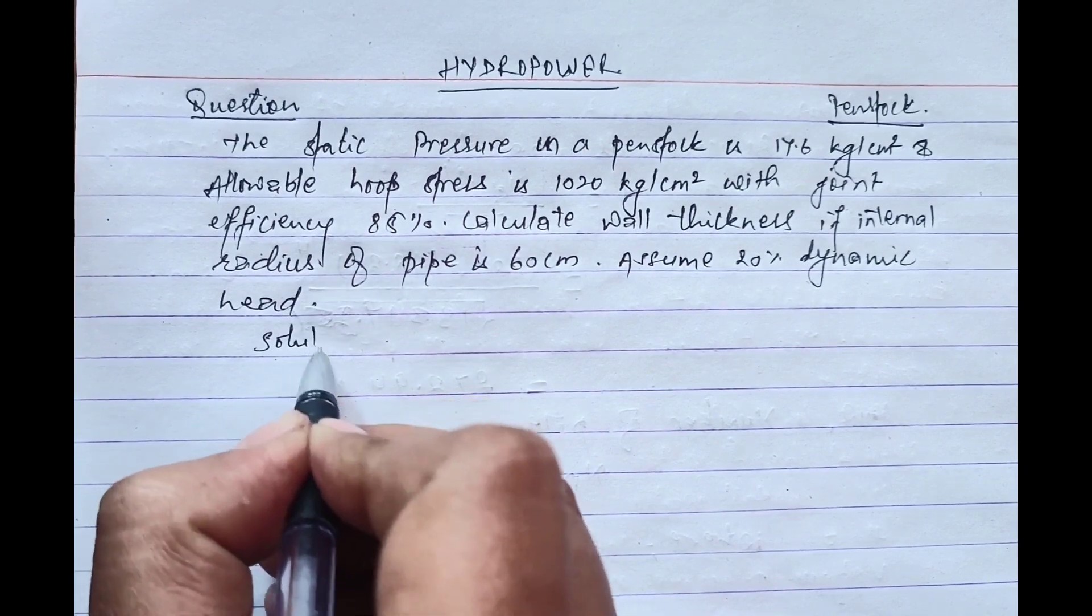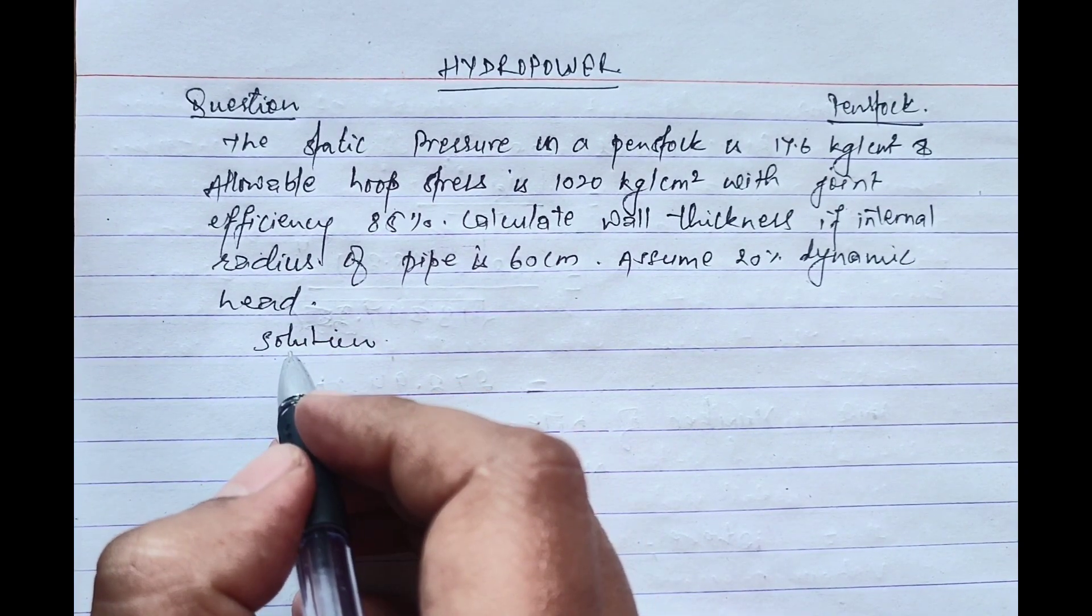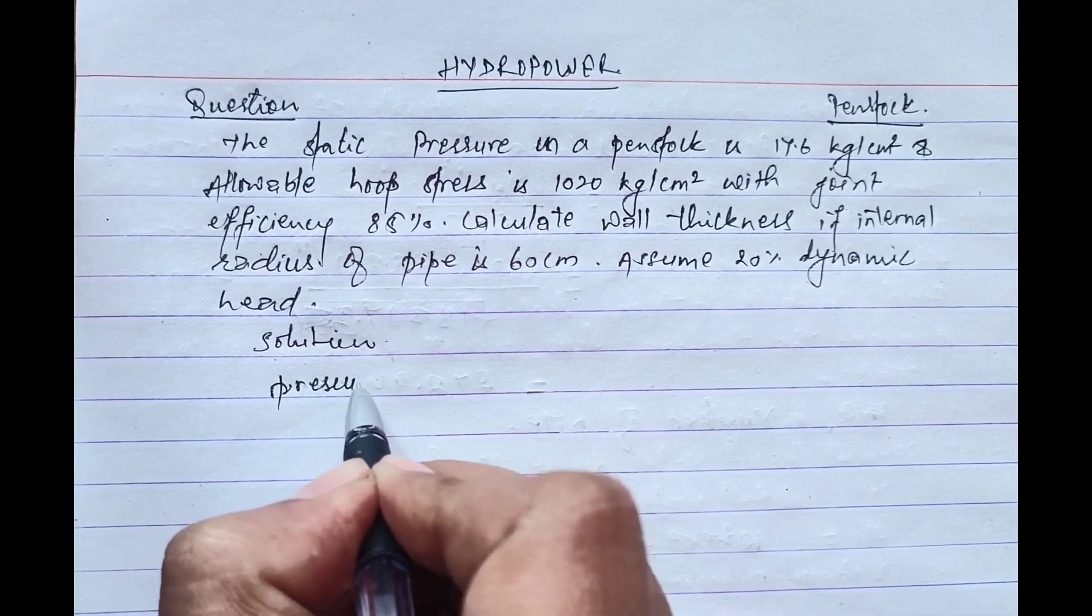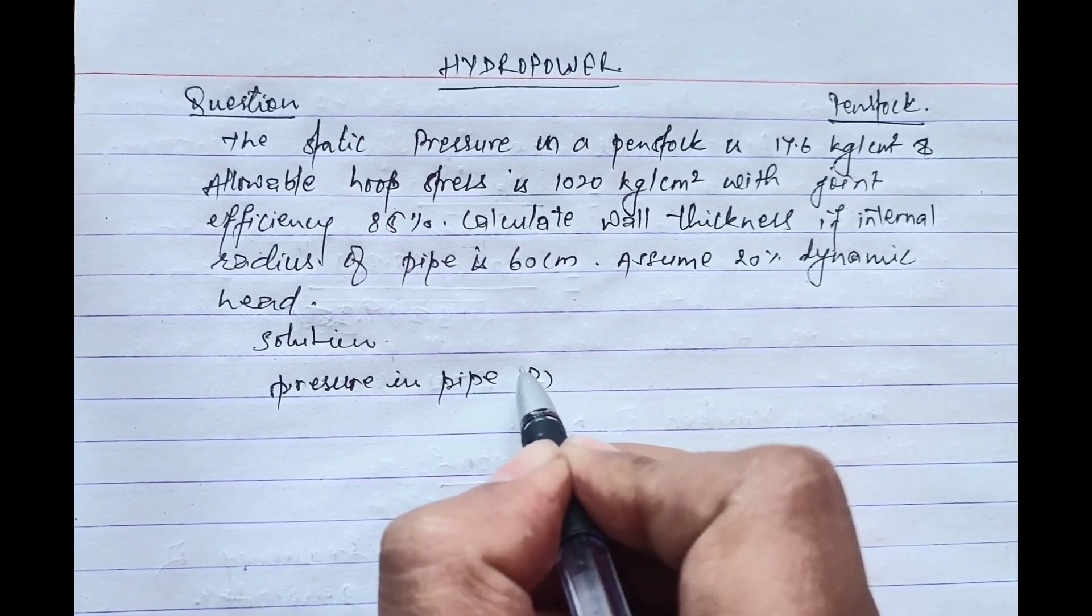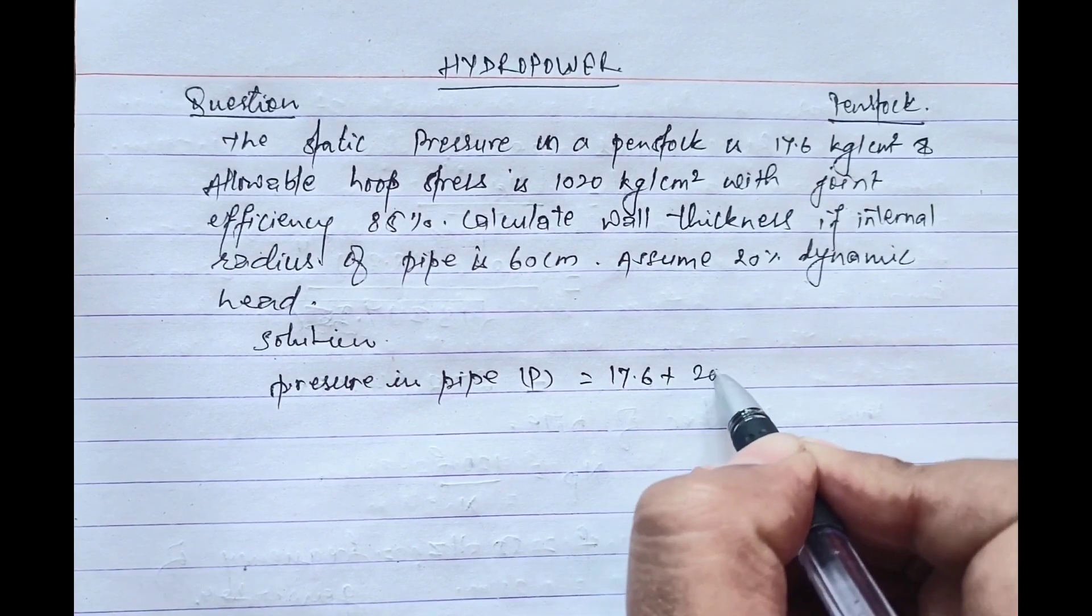Given data: total pressure in the pipe P equals 17.6 plus 20 percent of 17.6, which equals 21.12 kg per cm².